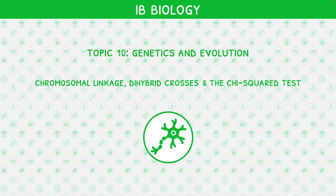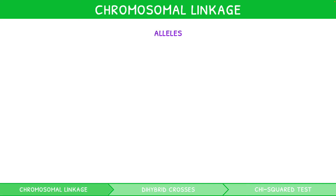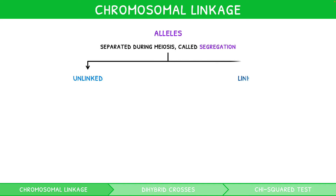In the fourth video of our IB Biology Topic 3 video series, we introduced alleles with regards to sex chromosomes and autosomes. Remember that during meiosis, these alleles separated into the daughter cells — called segregation. During this process, there are two different types of genes: unlinked and linked.